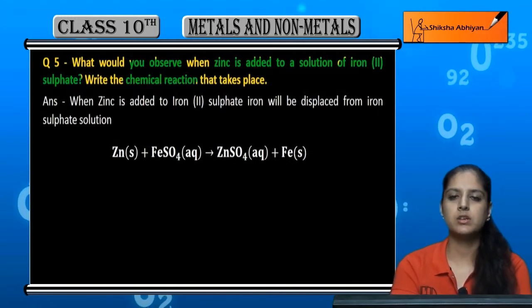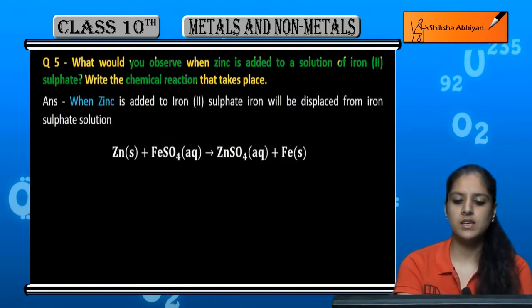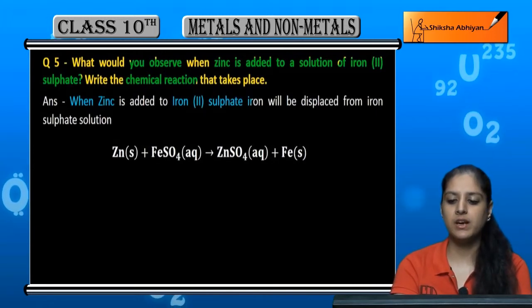We have to write the chemical reaction, the chemical equation. So when we add zinc to iron sulfate, there will be a displacement reaction.